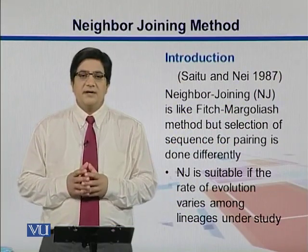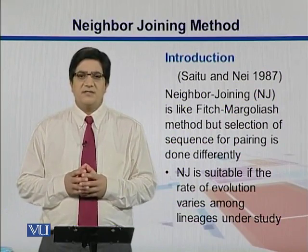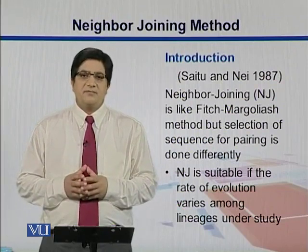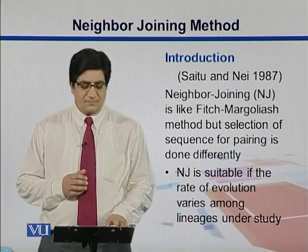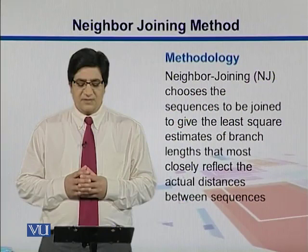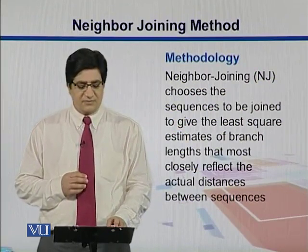It takes the sequences and does some kind of clustering with those sequences, then puts those clusters together in the shape of an integrated tree. NJ chooses the sequences to be joined to give the least square estimates of the branch lengths that most closely reflect the actual distances between those sequences.